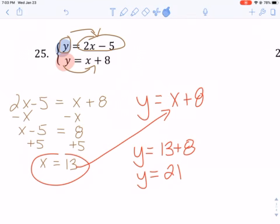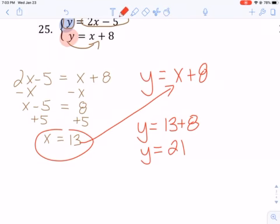So I've solved for y and x. I can now make an ordered pair. So my first value is always my input or my x, 13. My second value is always my output or my y, 21.